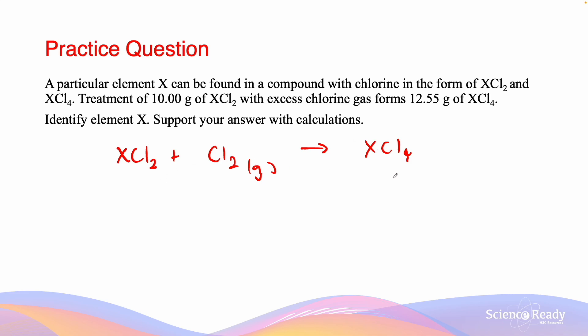Because of law of definite composition, the difference in mass, 12.55 and 10 grams, must be equivalent to the amount of chlorine gas involved in the reaction. The mass of Cl2 equals 12.55 minus 10.00 equals 2.55. The number of moles of Cl2 equals 2.55 divided by 35.45 times 2, and that equals 0.0360 moles.